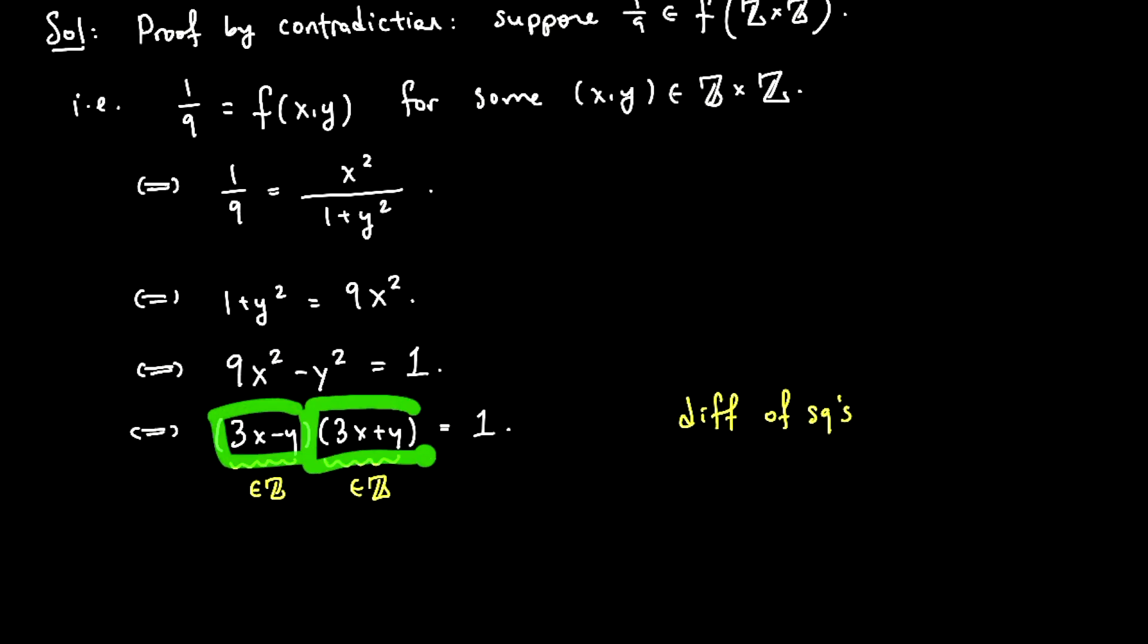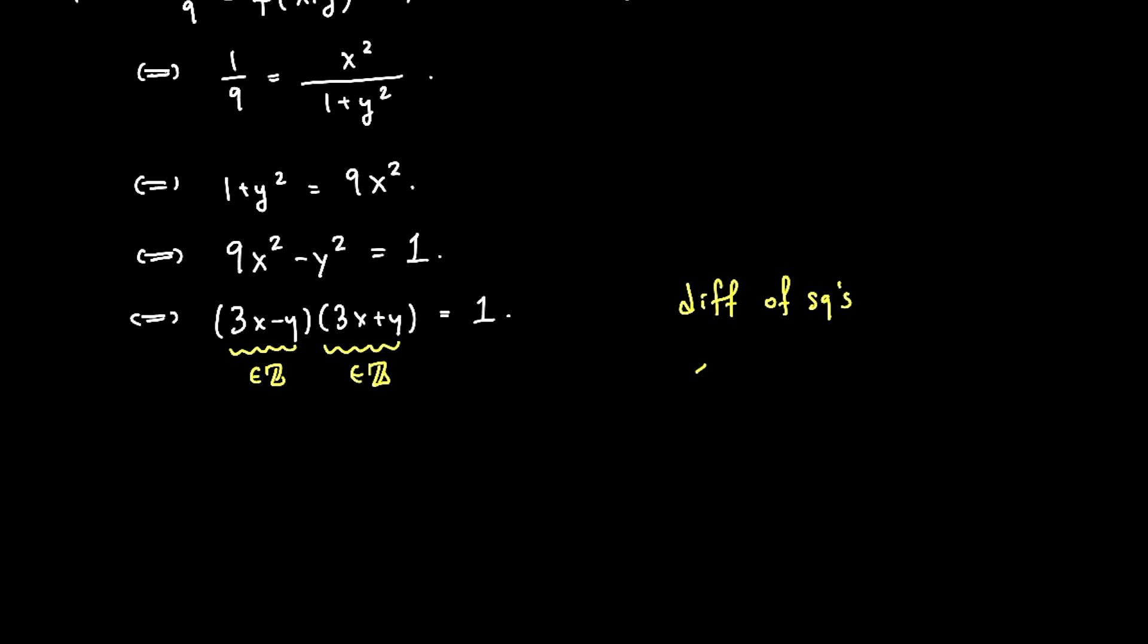The only possibility is if, well, that means these are factors of 1, and the only possible way I can split 1 into a product of two integers is if I do 1 equals 1 times 1. The only possibilities are 1 equals 1 times 1, or 1 equals negative 1 times negative 1. Those are really the only two possibilities.